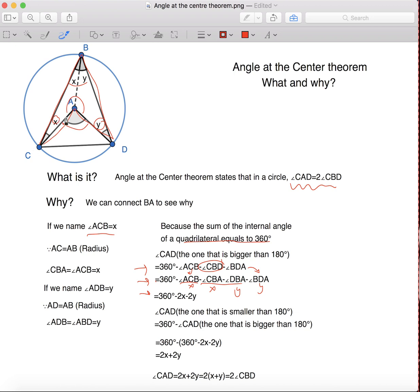We know that angle CAD, the one that's bigger than 180, add the one that is smaller than 180, and these two sum up to 360. So, this gives us the equation: angle CAD, the one that is smaller than 180, equals to 360 minus the one that's bigger than 180.